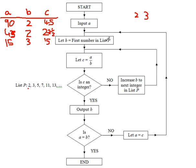Let B equal the first number in list P. Let C equal A divided by B. Is C an integer? No. Increase B to the next integer — we're seeing if 2 divides it; if it doesn't, we go on to 3. Let C equal A divided by B. Is C an integer? Yes. Output B — the value of B currently is 3 again.